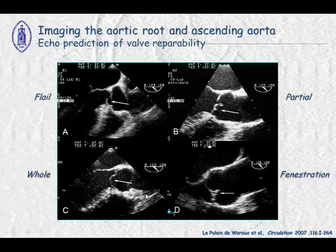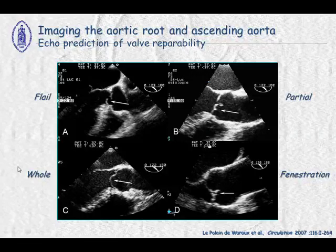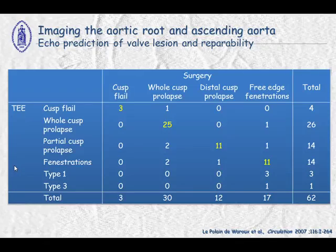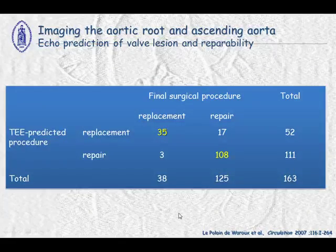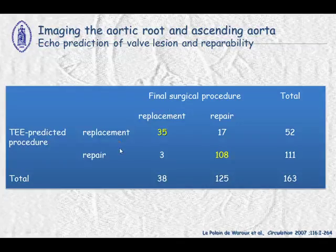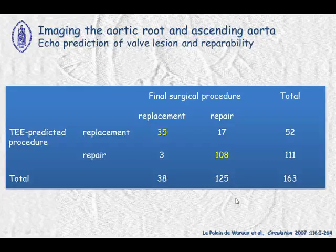Looking more closely at prolapse, transoesophageal echocardiography can very well identify flail leaflet, whole-cusp prolapse, partial-cusp prolapse, and fenestration compared to the surgical finding. And finally, if transoesophageal echocardiography identifies good quality tissue, we can predict repair; if it shows poor quality tissue, we can predict replacement — and this closely matches what the surgeon will do thereafter.